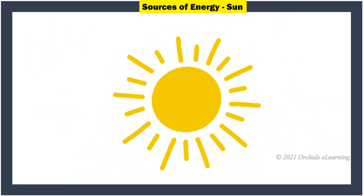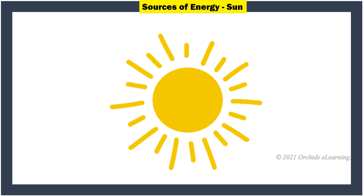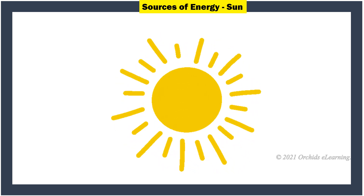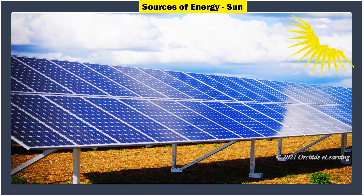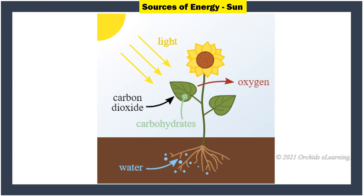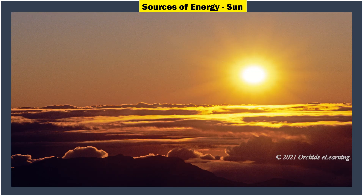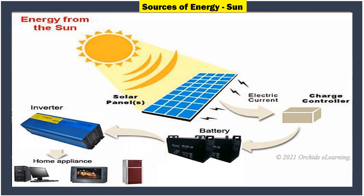Sources of energy — Sun: The main source of all energy on the earth is the sun. The energy that we get from the sun is called solar energy. Plants use solar energy to make food with the help of their leaves. Food has energy stored in chemical form. We get heat and light energy from the sun, and solar energy can also be used to generate electricity.